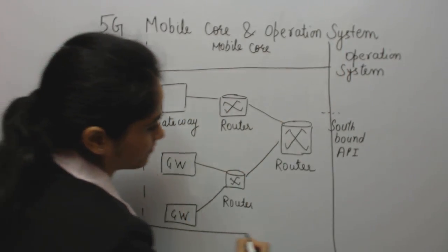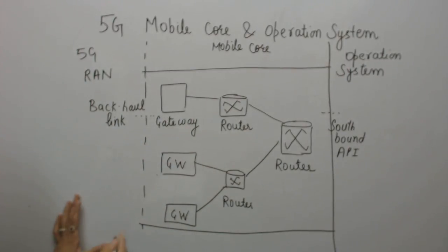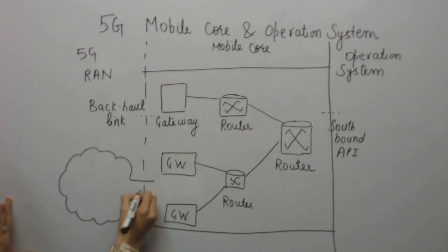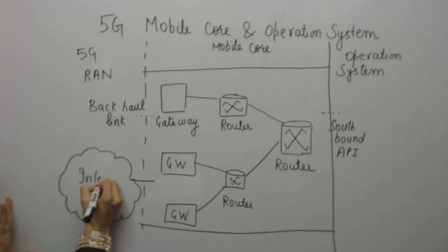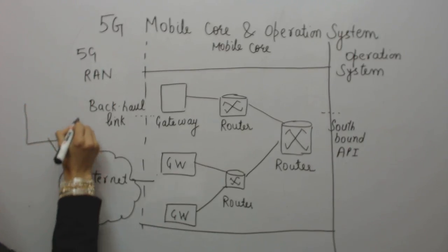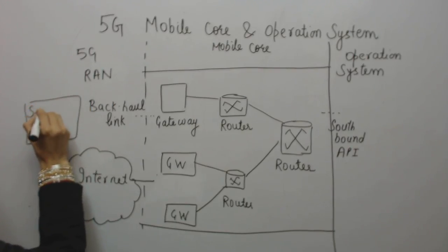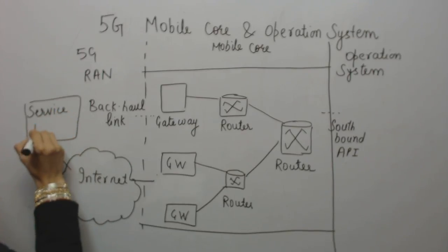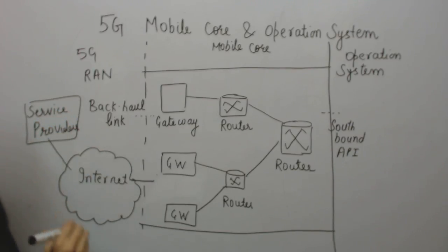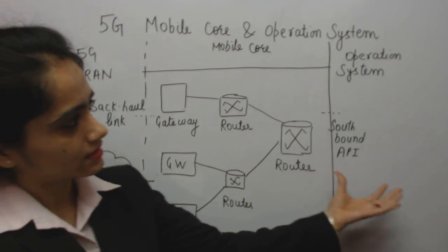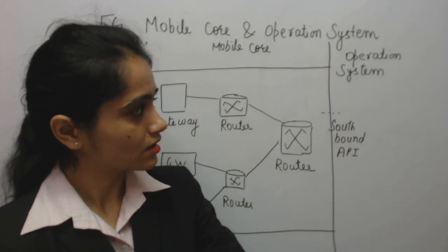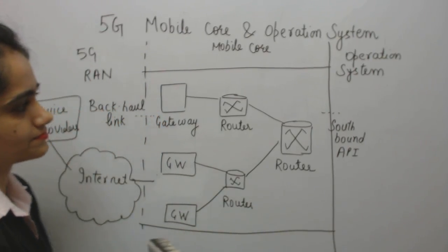This mobile core network is connected with the internet, and the internet is further connected with various service providers. So we have internet and service providers as part of this architecture.